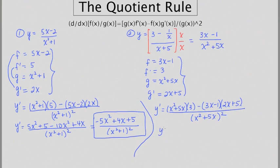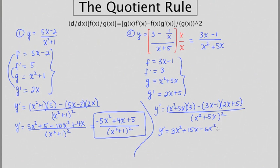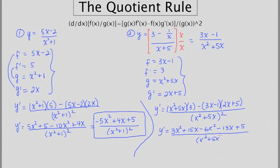Now we've got to clean up. We'll start with some distribution: 3x squared plus 15x. Then I'm going to foil and distribute the negative through all at the same time. We get minus 6x squared, then negative 13x for the outer and inner terms, and plus 5 for the last term. This is all over x squared plus 5x squared.